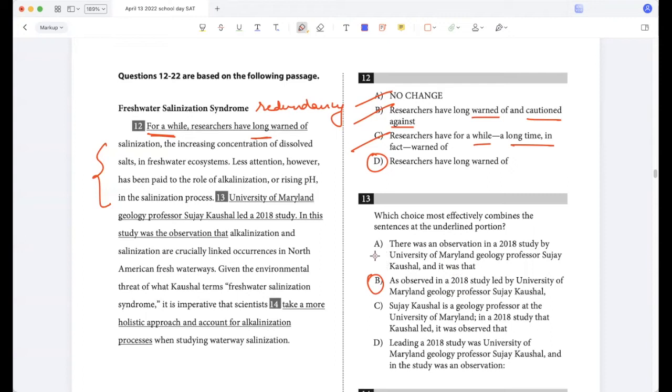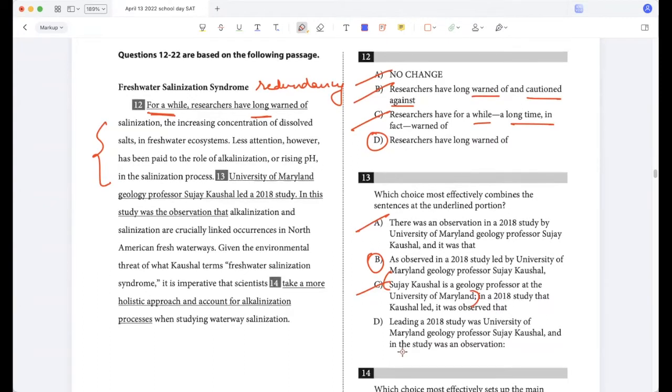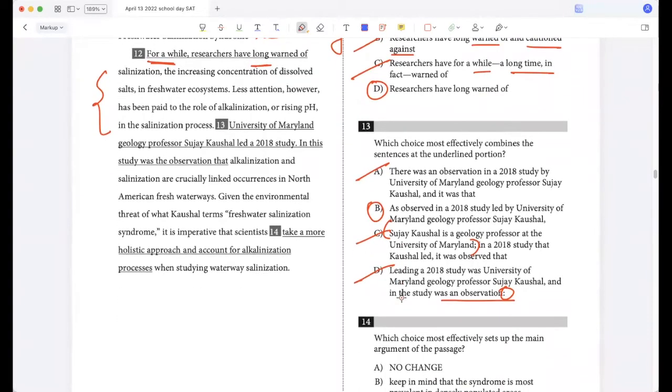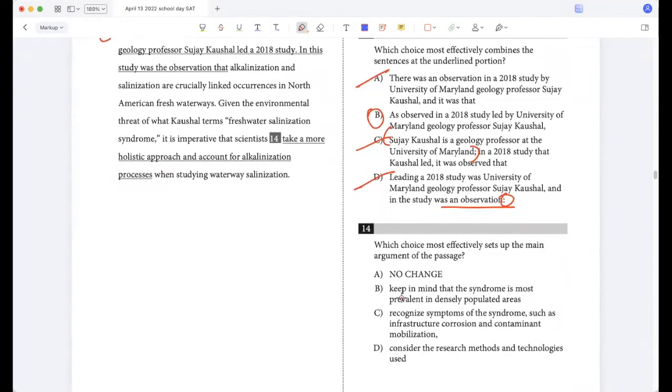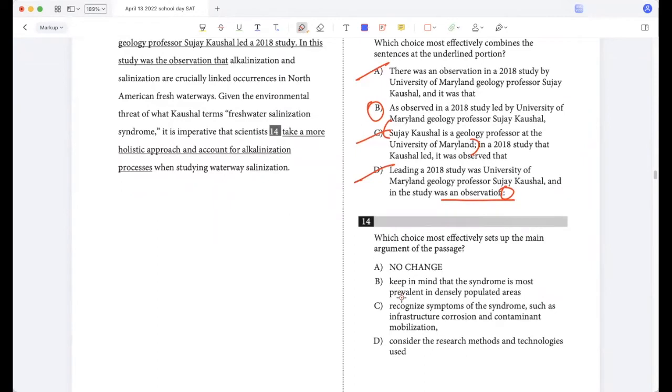Now if you look at A, I'm using too many words. I can say the same thing with fewer words, so A is not correct. Here I'm making Sujay Kaushal the main subject, while the idea is to convey what the study said. And also too many words. And here again, I'm making Kaushal the main subject, and this is also grammatically incorrect because I'm putting a colon at the end of a segment which is not complete, so D is also wrong.